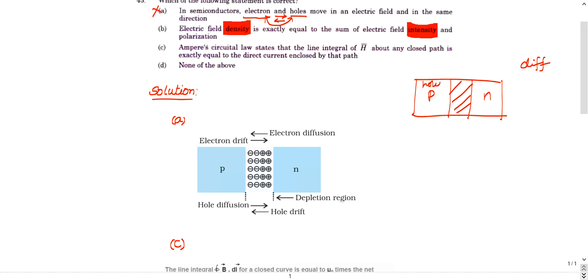Here holes are majority, maximum number of holes are there here. Here maximum number of electrons are present. So holes will travel like this, electrons will travel like this. Electron diffusion current will be in this direction and holes diffusion current will be in this direction.